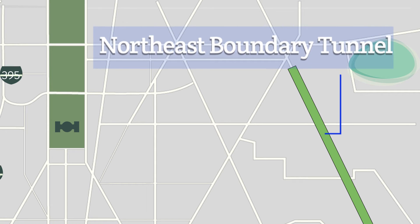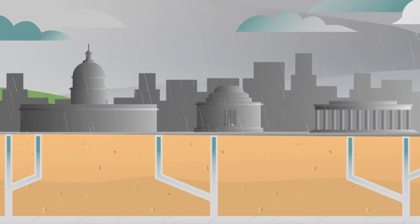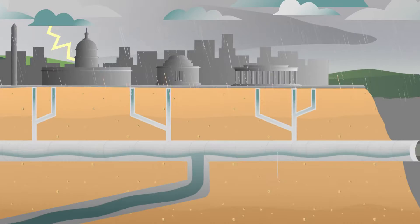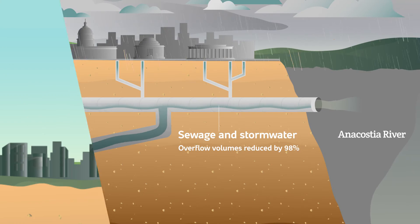Lane Construction is using a TBM for the Northeast Boundary Tunnel in Washington, D.C. to help reduce sewage overflows due to heavy rains and improve the water quality of the Anacostia River.